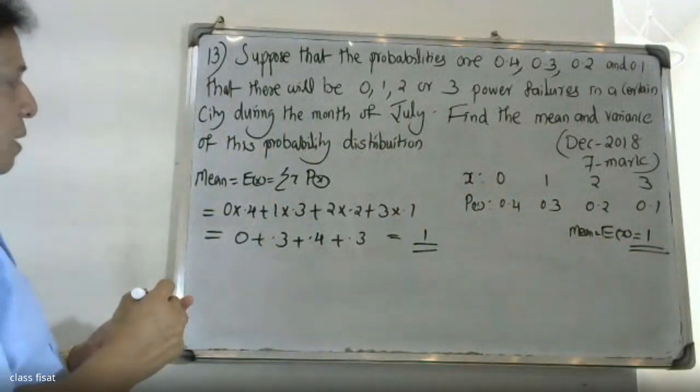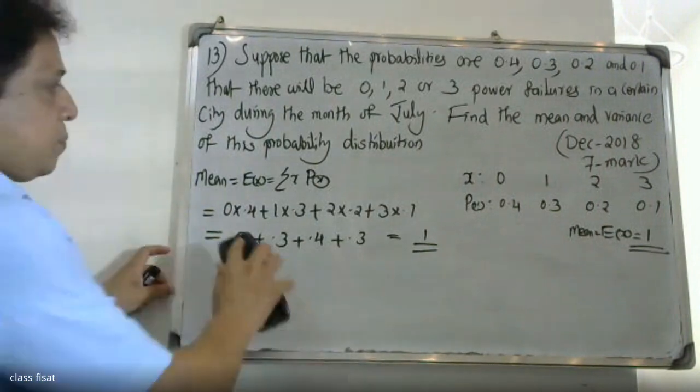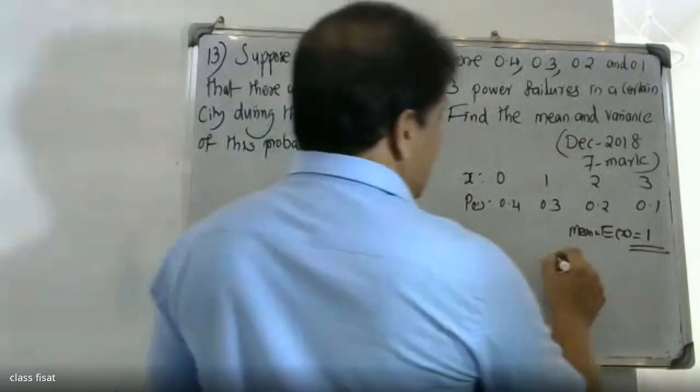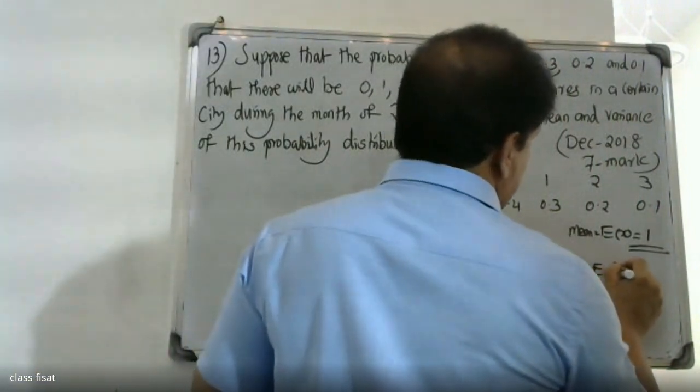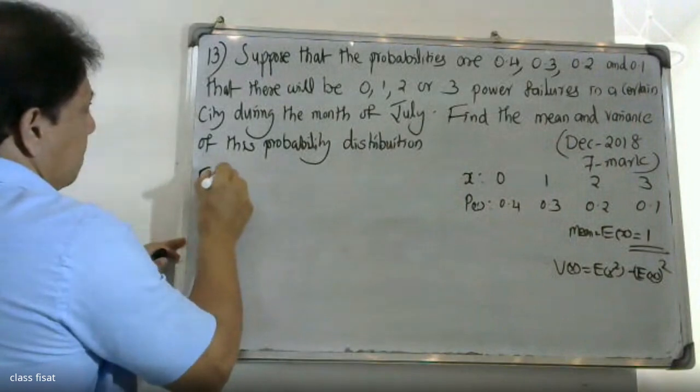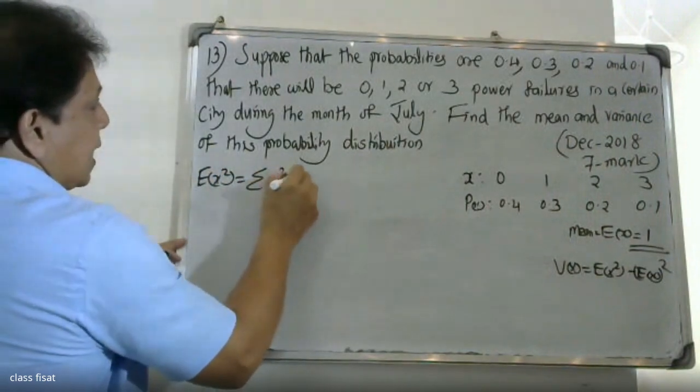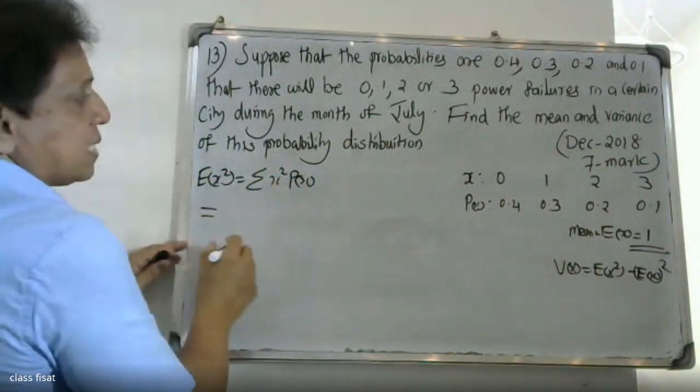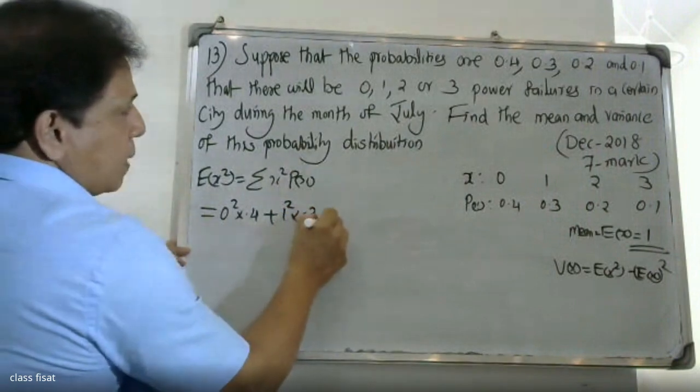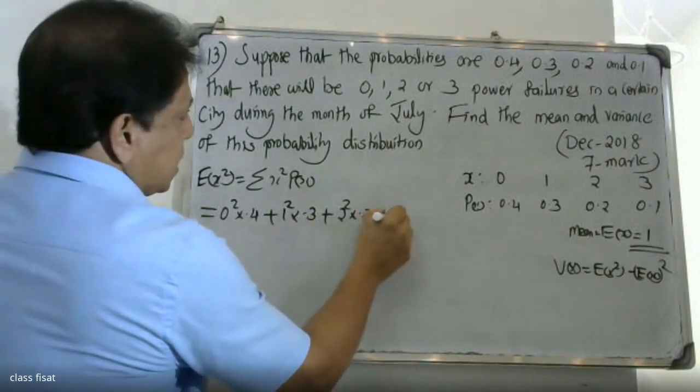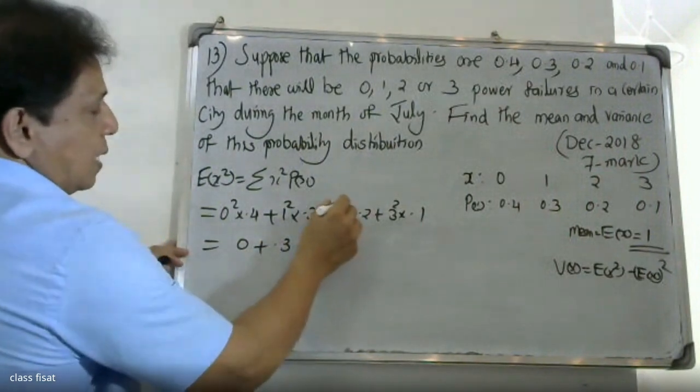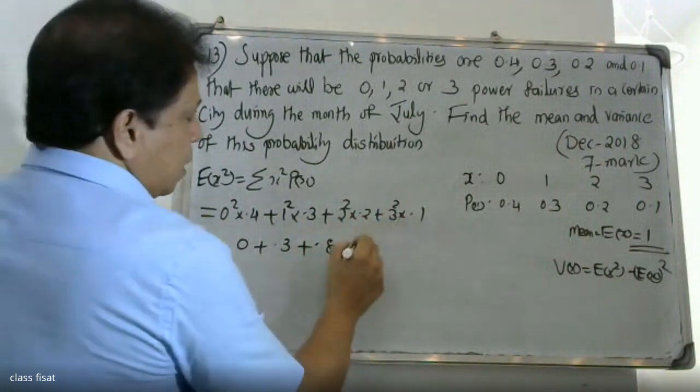Now we have to find the variance. The variance formula is: variance of X equals expectation of X square minus expectation of X whole squared. Now, the expectation of X square is 0 squared into 0.4 plus 1 squared into 0.3 plus 2 squared into 0.2 plus 3 squared into 0.1. This equals 0 plus 0.3 plus 0.8 plus 0.9.